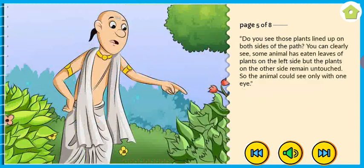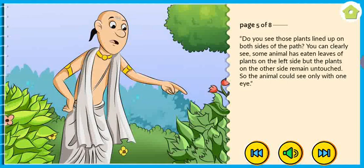'Do you see those plants lined up on both sides of the path? You can clearly see some animal has eaten the leaves of plants on the left, but the plants on the other side remain untouched. So the animal could see only with one eye.'